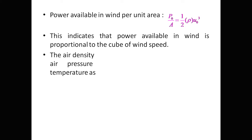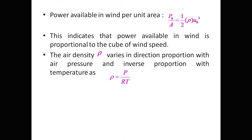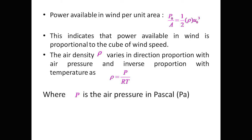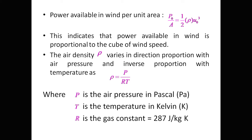The air density ρ varies directly proportional to air pressure and inversely proportional to temperature, as ρ = P/(R·T), where P is air pressure in pascals, T is temperature in kelvin, and R is the gas constant with a value of 287 J/(kg·K).